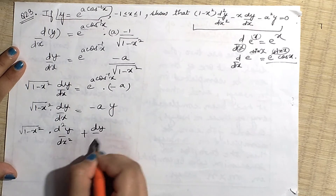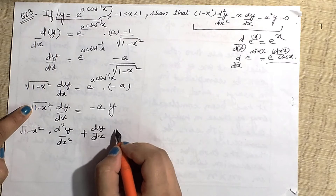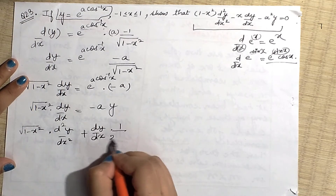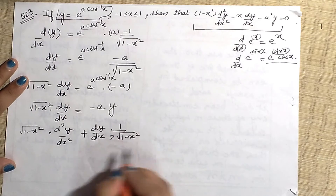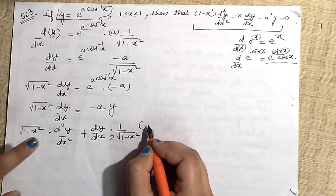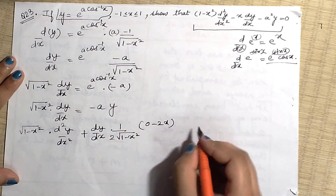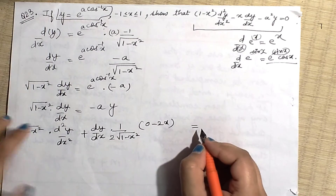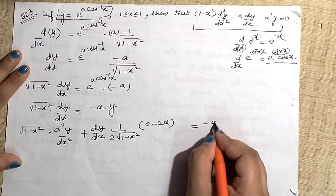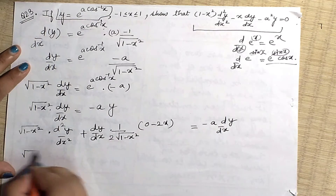Continuing: the derivative of (1−x²) is −2x, so the second term becomes dy/dx · (−2x)/(2√(1−x²)). The 2s cancel, giving −x·dy/dx / √(1−x²). The right hand side is −a·dy/dx. Taking LCM as √(1−x²), we multiply through: (1−x²)·d²y/dx² − x·dy/dx, all over √(1−x²), equals −a·dy/dx.